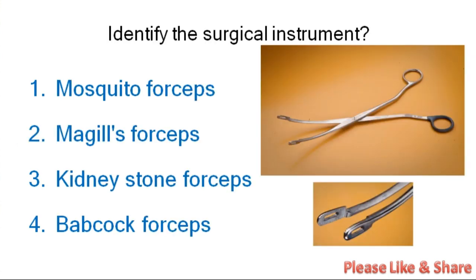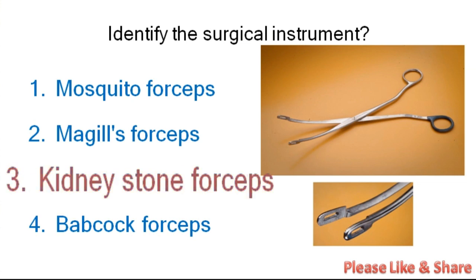Next question. Identify the surgical instrument. Options: Mosquito forceps, Maggles forceps, Kidney stone forceps, or Babcock forceps. The correct answer is Kidney stone forceps. This forceps is used during kidney surgery to remove the stone.